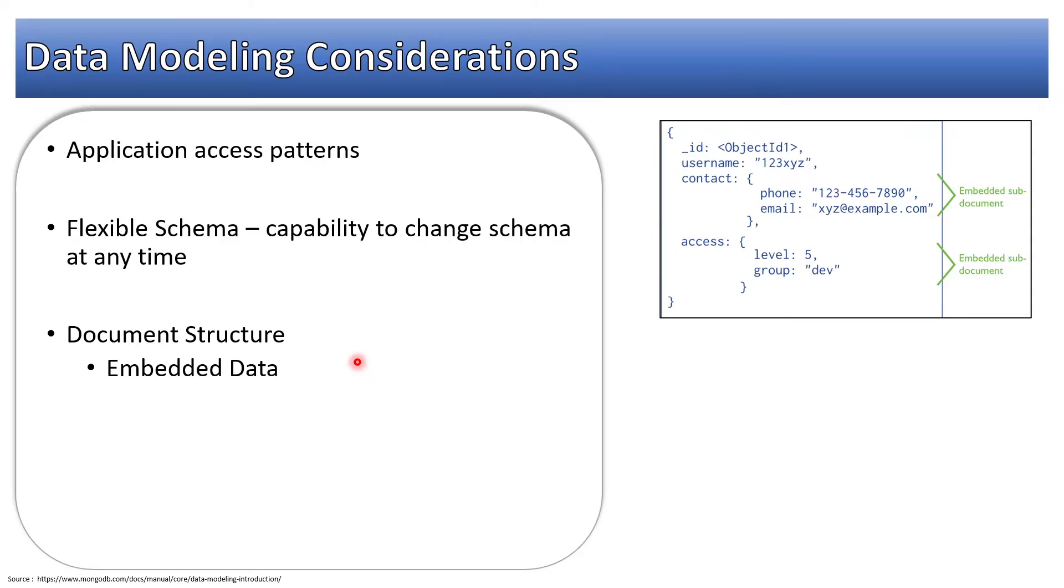Embedding data means that we have a main document and we want to include the sub-document - nested JSON you can say. We want to store this information within the main document. That is called embedding. Here we have main document ID, username, and we want to store contact and access level within the same document, the main record.